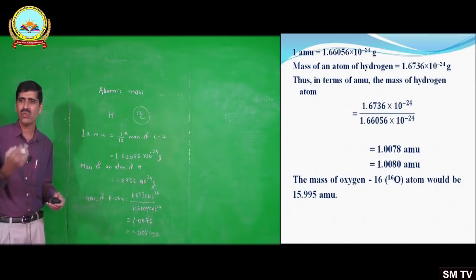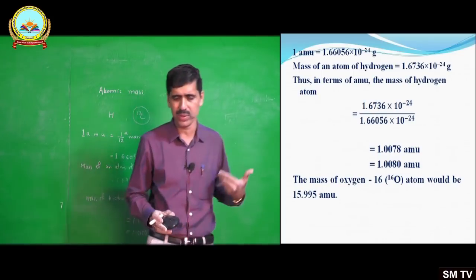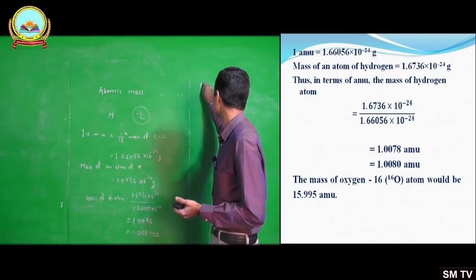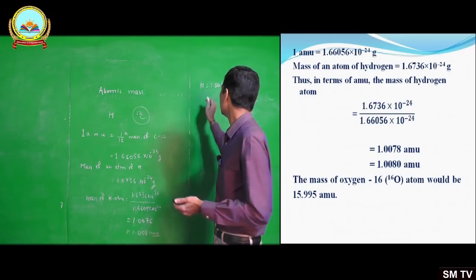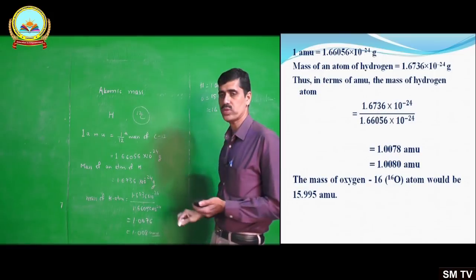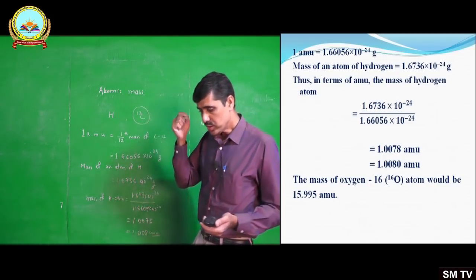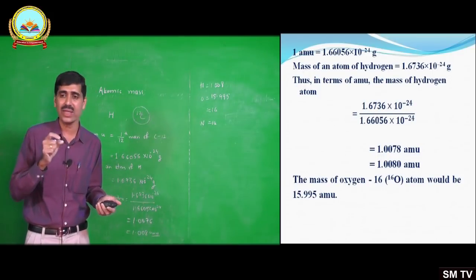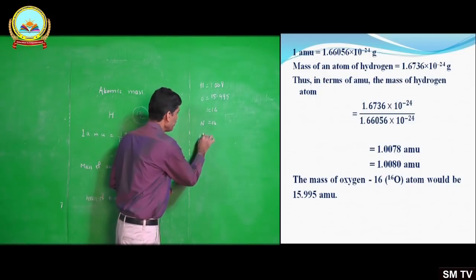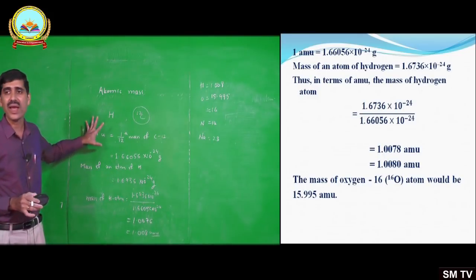This is how we have atomic mass values for a variety of elements. For example, hydrogen is 1.008, oxygen is approximately 15.996 or roughly 16, nitrogen is taken as 14, carbon is 12, and sodium is 23. The present system of atomic mass is based on carbon-12 as the standard. In terms of isotopes present, we calculate the average atomic mass, which gives fractional values.